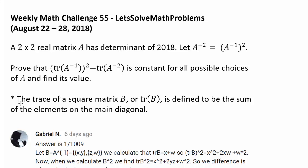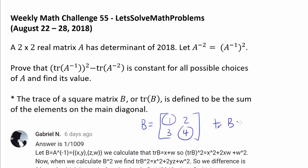Here's a nice note: the trace of a square matrix B, or trace of B, is defined to be the sum of the elements on the main diagonal. So if our matrix B is [[1,2],[3,4]], trace of B is simply going to be 1 plus 4, also known as five.